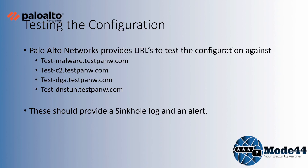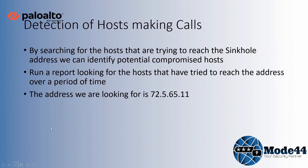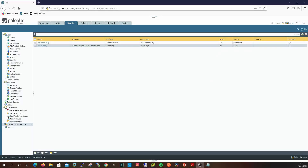Now we're going to test the configuration. Palo Alto provides test URLs, so we fire them off and verify they're being sinkholed and that we get an alert. Moving from there, we'll look at detection of the host making the calls. I've already created a custom report for this. Let's get some results into it first by trying the test URLs.